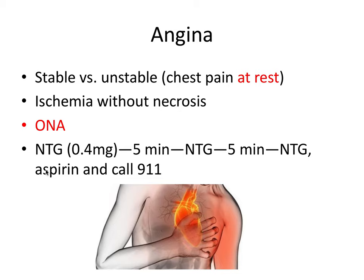Aspirin is used to prevent blood clots and facilitate blood flow to the heart. Nitroglycerin is a nitrate that works via vasodilation, dilating the coronary arteries to allow more oxygenated blood to reach the heart — which desperately needs oxygen because it's not getting enough in this situation.